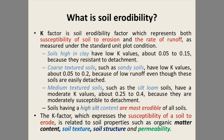Soils having high clay content have low K values ranging from 0.05 to 0.15, because they are resistant to detachment. Coarse textured soils such as sandy soils also have low K values in the range of 0.05 to 0.2.